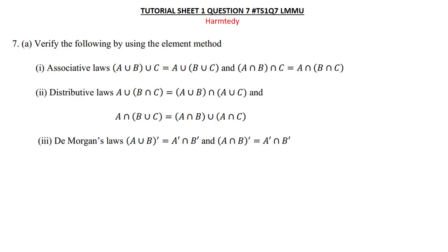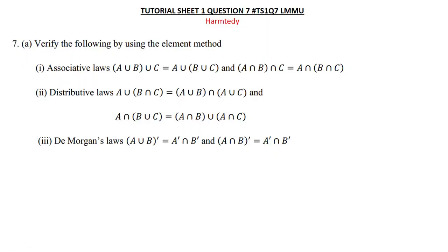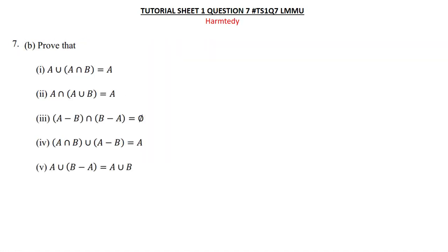Hey everyone, welcome to today's tutorial. I'm solving question 7 from story sheet 1. If you're looking for this question on YouTube, simply type 'HTS1' meaning story sheet 1, 'Q7' for question 7, and 'LMMU' which is the name of your university. If you have not yet subscribed to the channel, please do so. Question 7 says: verify the following by using the element method, and part B says prove that A union A intersection B is equal to A.